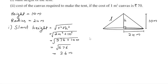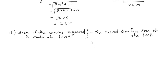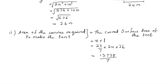Now let's find the cost of canvas required to make the tent. The area of canvas required is equal to the curved surface area, which is equal to π r l. Placing values: 22 by 7, radius is 24, and slant height is 26. Multiplying: 22 into 24 into 26 gives 13728 divided by 7. So the area of canvas required is 13728 divided by 7 meter square.